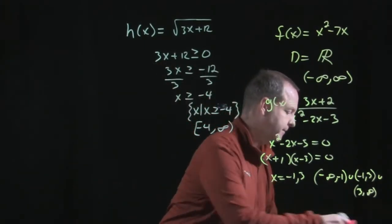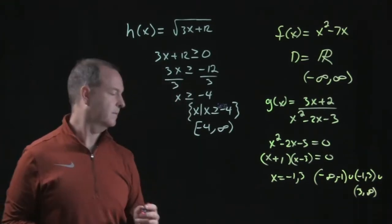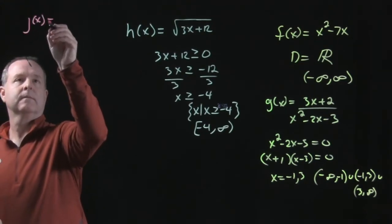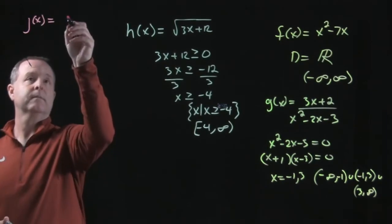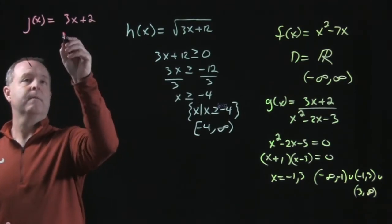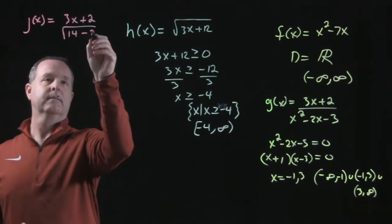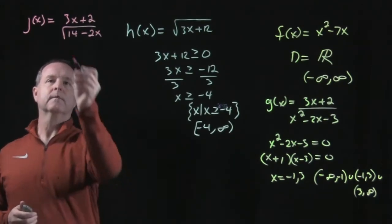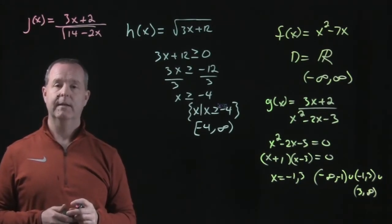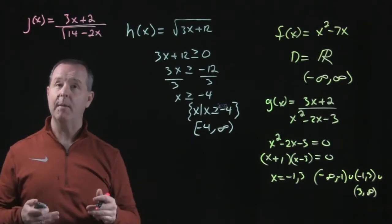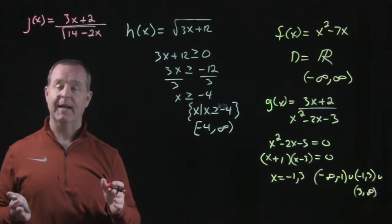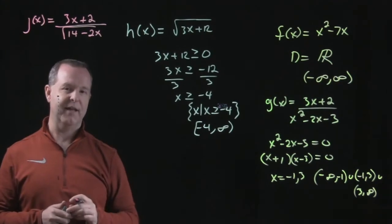We have one last one. Let's have a j(x). j(x) = (3x + 2)/√(14 - 2x). I have two issues going on here that I hope that you're able to observe. Both I have a rational expression and in the denominator, I have an even index root. So, I have to make sure my index root has a positive number in it, but I also have to make sure that it does not equal zero.